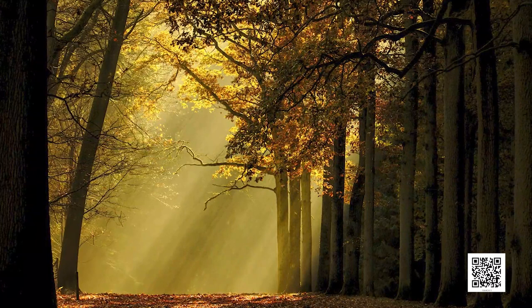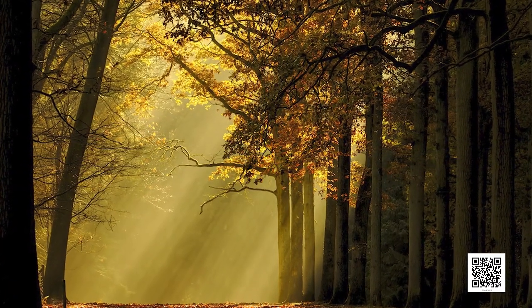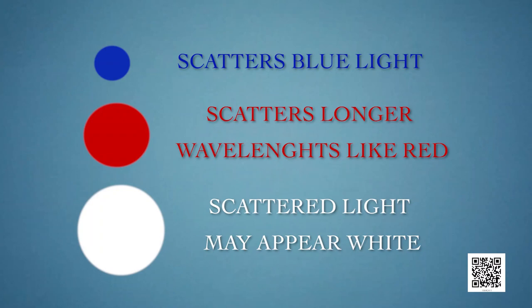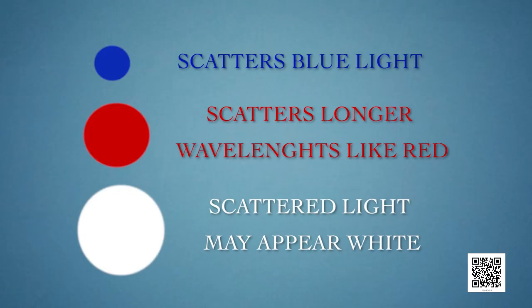The colour of scattered light depends upon the size of the scattering particles. Very fine particles scatter mainly blue light, while particles of larger size scatter light of longer wavelengths like red. If the size of the scattering particles is large enough, the scattered light may even appear white.